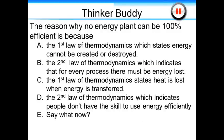ThinkerBuddy question. The reason why no energy plant can be 100% efficient is because A, the first law of thermodynamics, which states energy cannot be created or destroyed. B, the second law of thermodynamics, which indicates that for every process, there must be energy lost. C, the first law of thermodynamics states heat is lost when energy is transferred. D, the second law of thermodynamics, which indicates people don't have the skill to use energy efficiently. Or E, say what now?